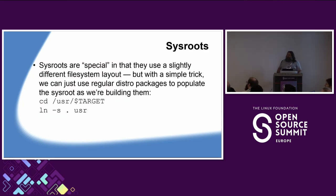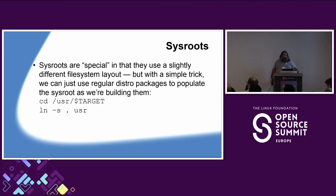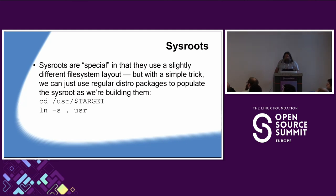The sysroot is a chroot environment that contains the binaries for the target platform. They are a bit special because they usually have a slightly different filesystem layout — you've probably seen /usr/aarch64-linux/lib and the likes, while regular packages would place library files in /usr/lib. But if you just symlink dot to usr, you get close enough: a /lib and /include that works in a sysroot filesystem layout. So we can just use the packages we are building to populate the sysroot as well, without having to rebuild or move stuff around.